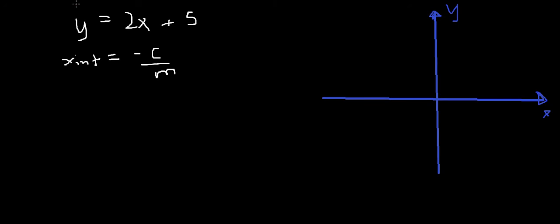If we remember, this is y equals mx plus c. So this is minus c, that's minus 5, and m is 2. So we get minus 5 over 2 is the x-intercept, which is what we had before.